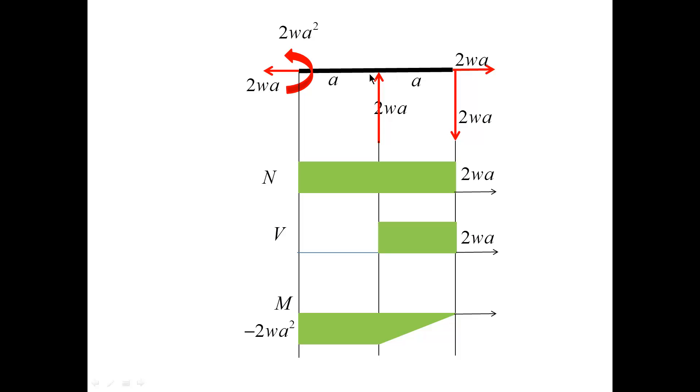At the point C, the shear force diagram experiences a jump positive 2Wa, no jump in M. Since there is no distributed load, the shear force diagram is constant, and the bending moment diagram proceeds with the slope equal to Wa from minus 2Wa squared to 0.